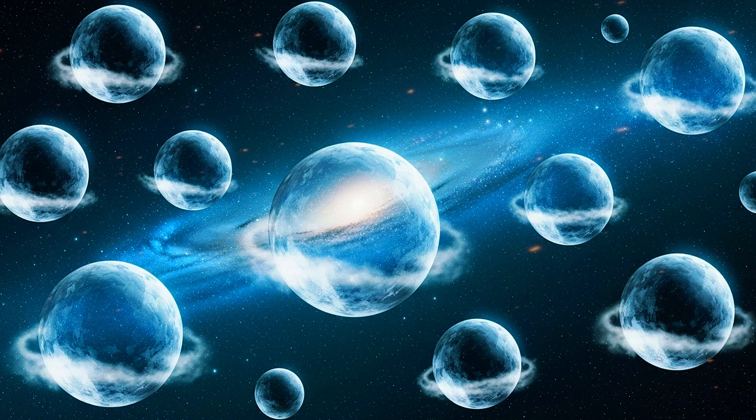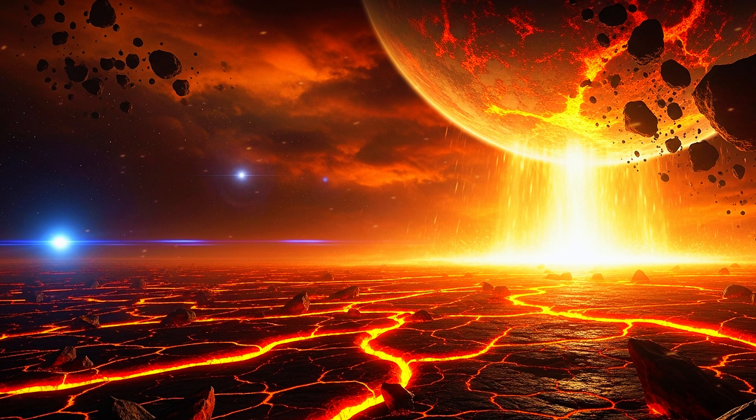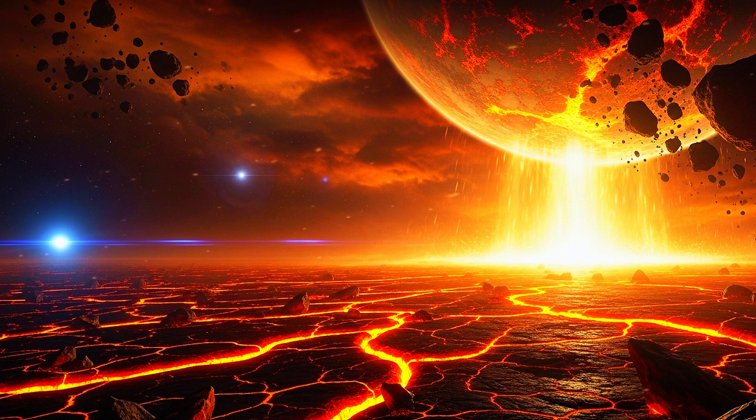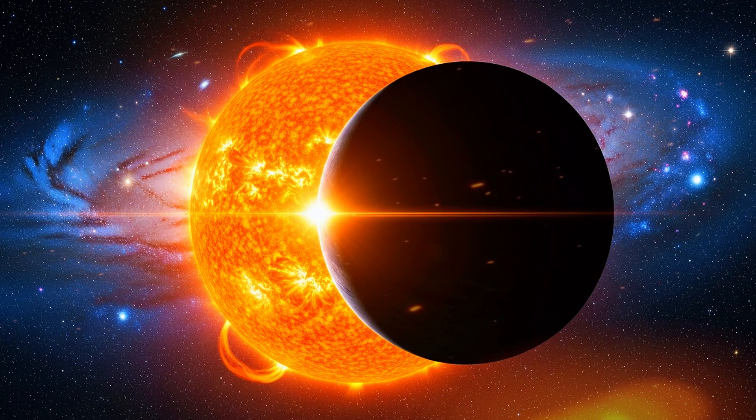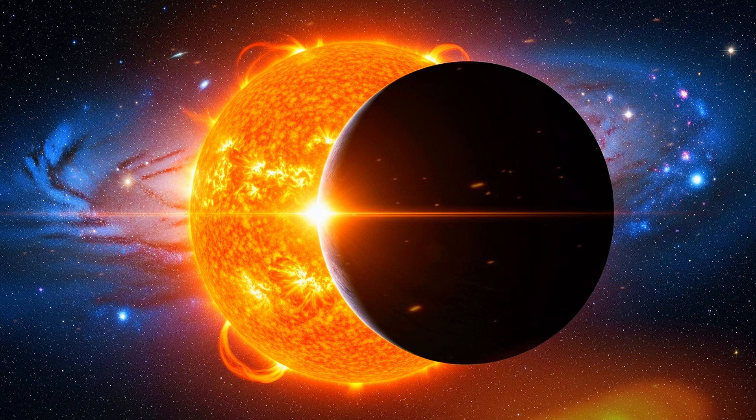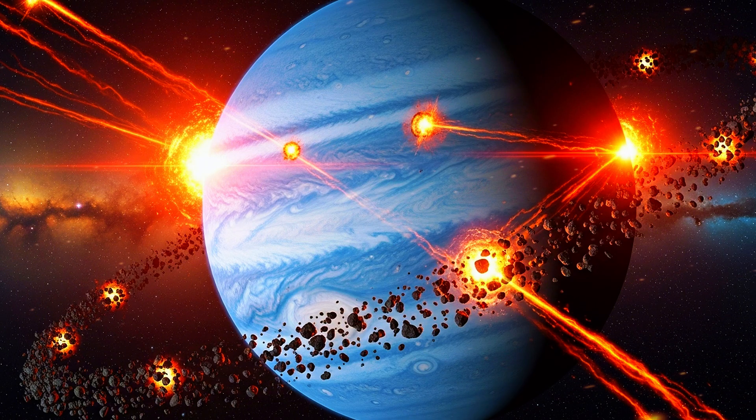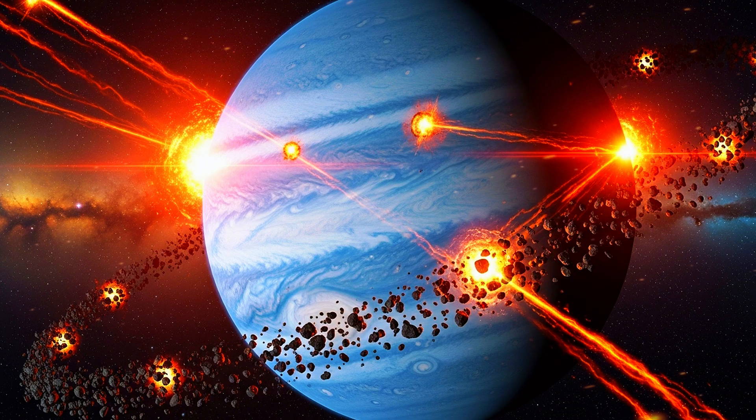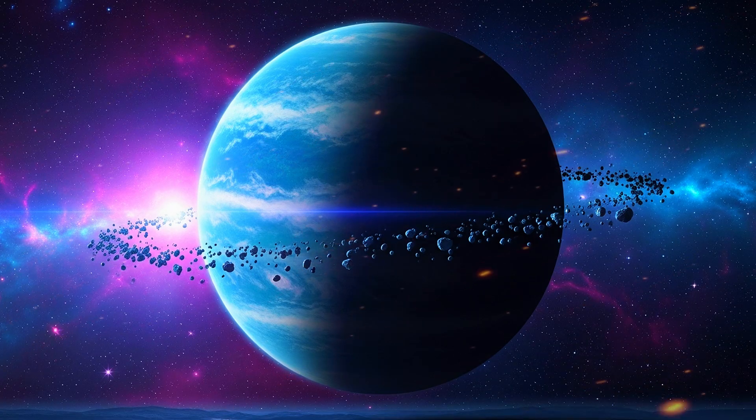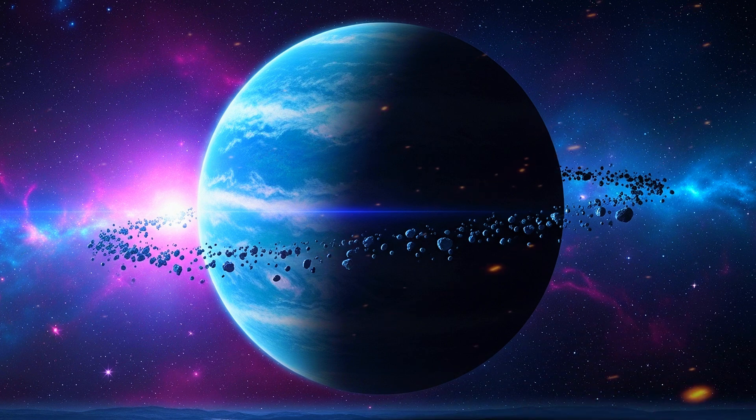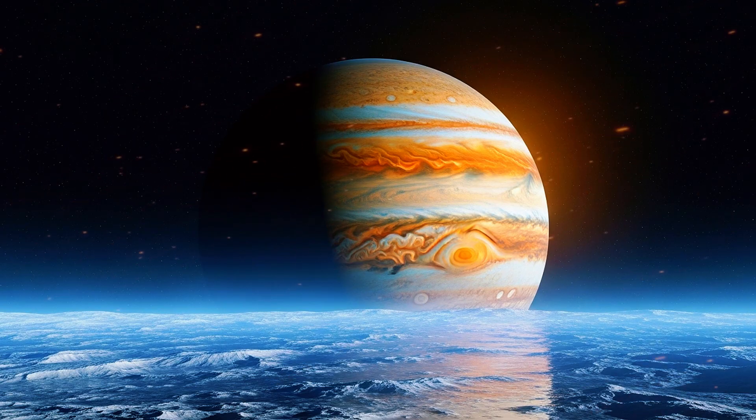And then there's the trajectory. 3I Atlas isn't just retrograde; it's inclined 175 degrees, essentially plunging headlong through the plane of the planets. At perihelion, it may reach speeds near 68 kilometers per second—over 150,000 miles per hour—relative to the sun. Our best telescopes will struggle to catch it because when it's closest to the sun, Earth will be on the opposite side, with only a narrow window for spacecraft like Lucy, Psyche, Europa Clipper, and Juno to glimpse it. Juno in particular will actually cross its dust tail near Jupiter.